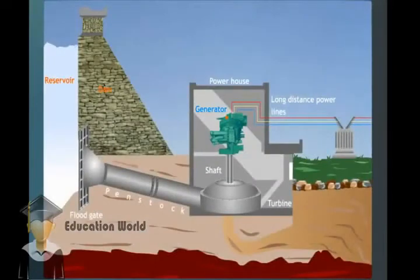A dam is built across a large river to hold back the river water and raise its level to form a reservoir. At the bottom of the dam, there is a floodgate.